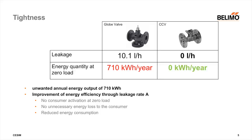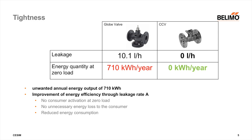As we have already learned about energy efficiency from another module, this energy loss of a globe valve can be calculated and it can be quite high. In this example, we have a leakage rate of this globe valve of 10.1 liters per hour, which leads to an energy quantity at zero load every year of 710 kWh. In comparison, a characterized control valve from Belimo has no consumer activation at zero load, no unnecessary energy loss to the consumer, and therefore reduced energy consumption.